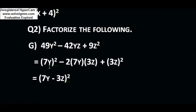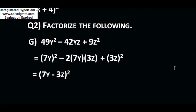According to the formula a² - 2ab + b², here a = 7y and b = 3z, so in the middle term you write 2 × 7y × 3z. In the last step, you can write the expression as (a - b)², which gives (7y - 3z)². In these two questions we used identity number 1 and identity number 2 to factorize.